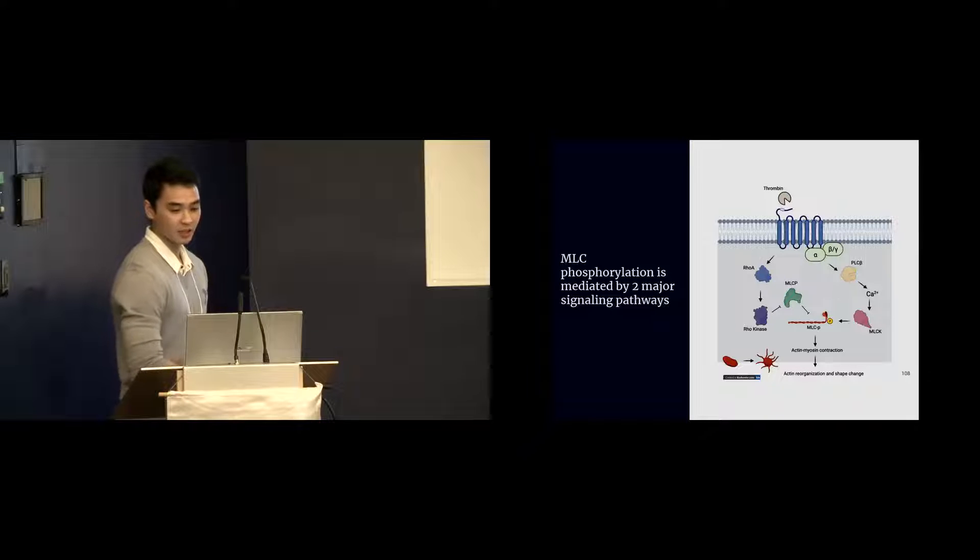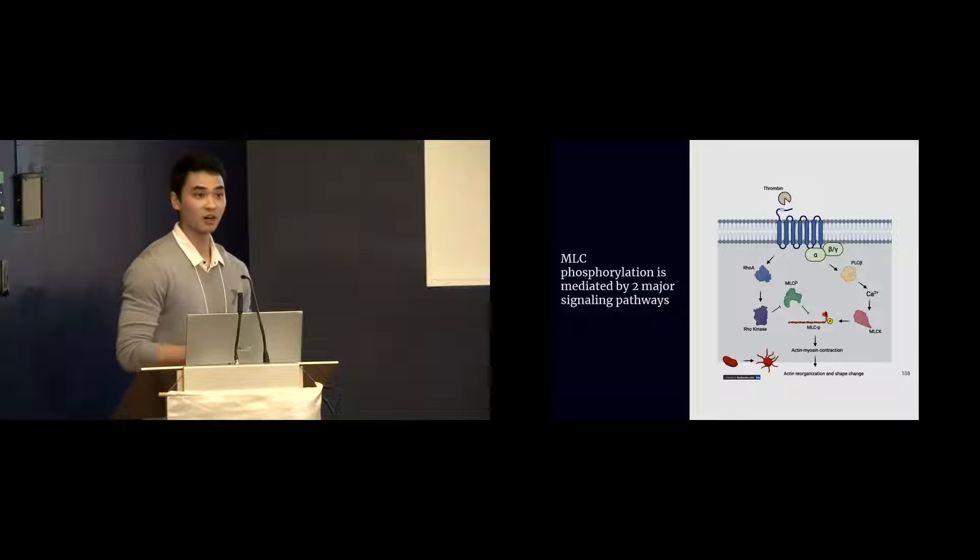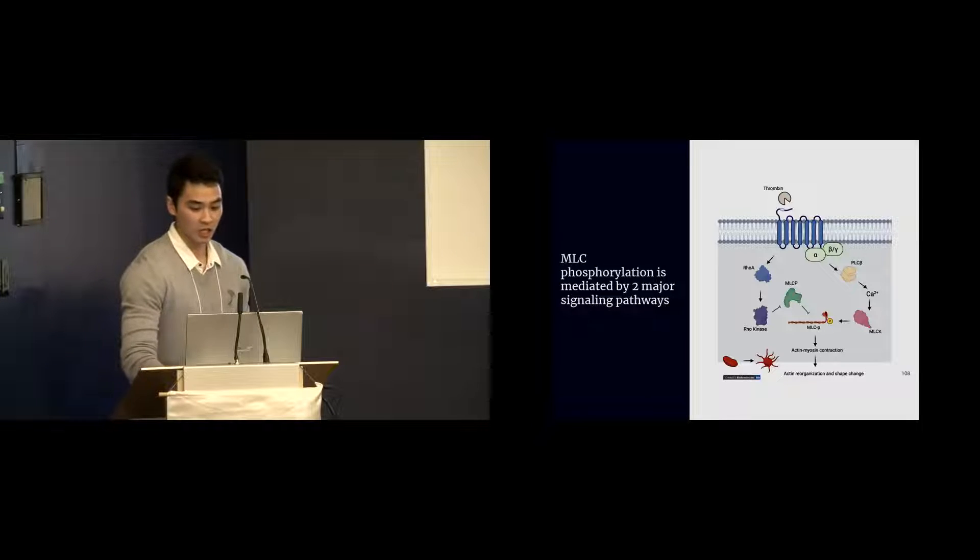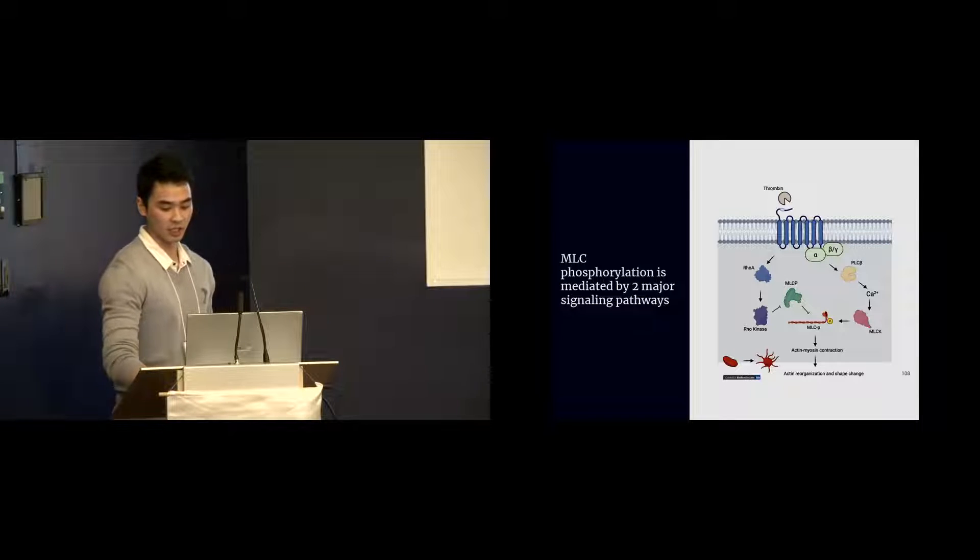On the other hand, in the calcium independent pathway, thrombin will lead to the activation of this GTPase called RhoA, which would then activate the downstream effector called Rho kinase, or ROCK. And ROCK would then phosphorylate MLC phosphatase, and this phosphorylation event will actually inhibit the function of the phosphatase. So both of these pathways synergistically allow for MLC to achieve maximum phosphorylation.